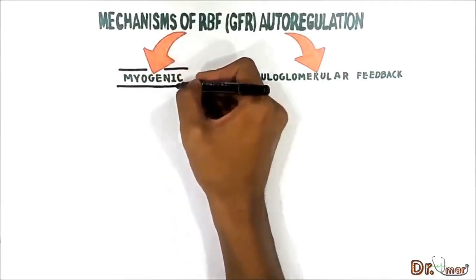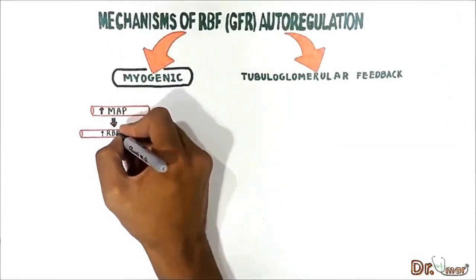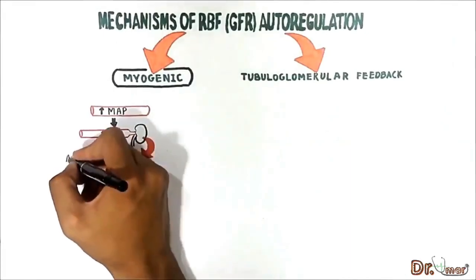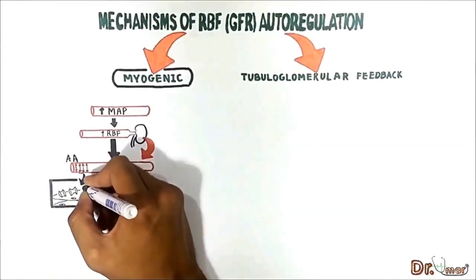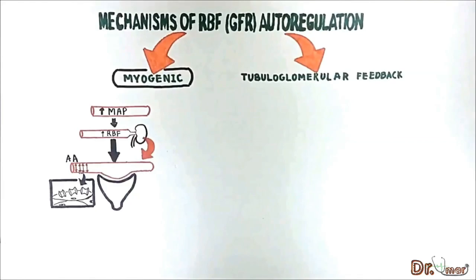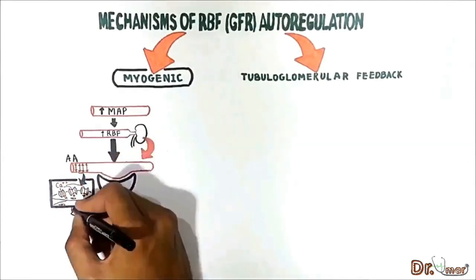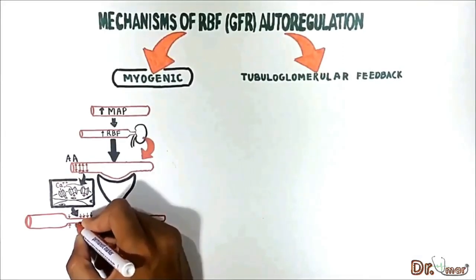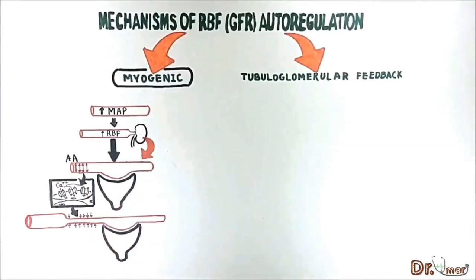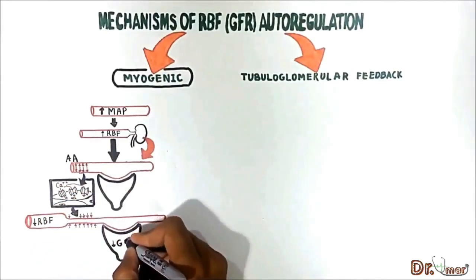First, let's talk about the myogenic mechanism. When mean arterial pressure increases, the renal blood flow also starts increasing for a while, which stretches the arteriolar wall. Stretching the vascular wall leads to the opening of stretch-sensitive calcium channels in the smooth muscle of the arterioles. When these channels open up, calcium moves from the extracellular fluid into the cell, causing the afferent arterioles to contract. This contraction prevents overdistension of the vessel and, by raising vascular resistance, helps prevent an excessive increase in renal blood flow. The renal blood flow decreases, which in turn slows the GFR.